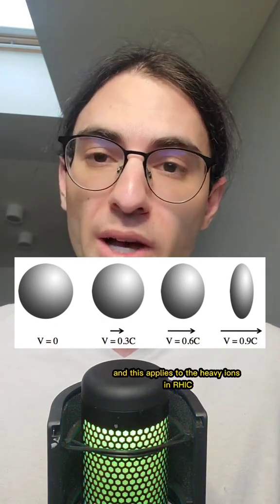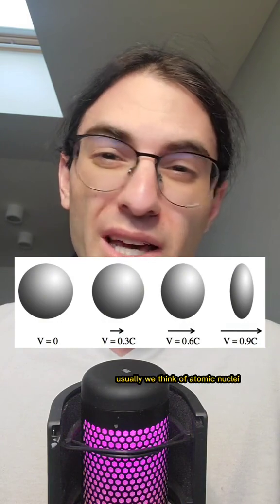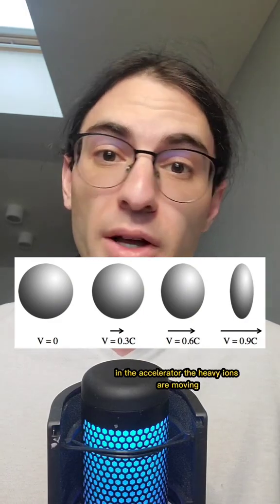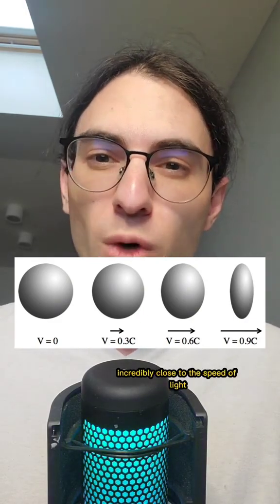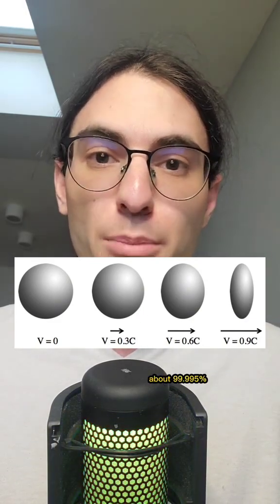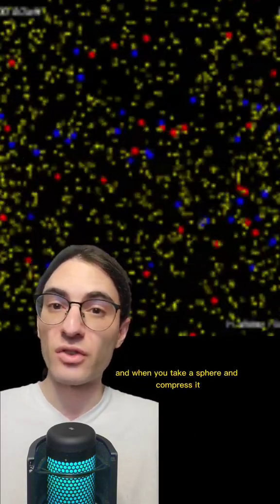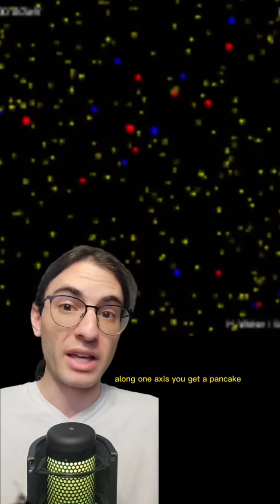And this applies to the heavy ions in RHIC. Usually, we think of atomic nuclei as roughly spherical in shape, but relative to the people and the machinery in the accelerator, the heavy ions are moving incredibly close to the speed of light, about 99.995%. And that means that along the direction of motion, they get compressed, and when you take a sphere and compress it along one axis, you get a pancake.